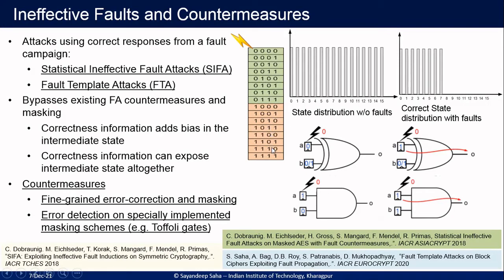One of the most prominent attacks called Statistical Ineffective Fault Analysis (SIFA) exploits this fact and can extract the key from the correct ciphertext. Given that if you just consider the correct ciphertext space, the intermediate where you are injecting the fault gets biased — it only takes seven or eight values among all possible valuations. So this bias helps in recovering the key.